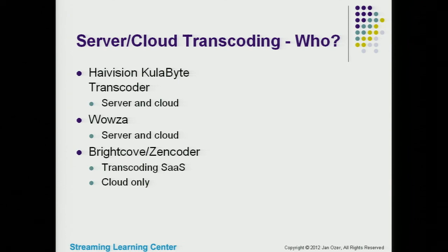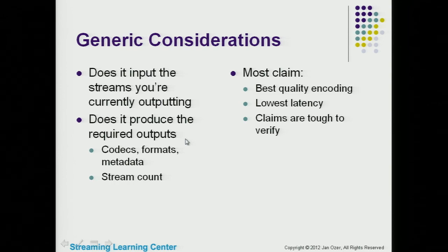Players: HayVision Coolabyte Transcoder, which has been shipping for a while; Wowza, also shipping for a while; and Brightcove-owned Zencoder, which just launched a transcoding software-as-a-service — cloud only, you can't put it on your own servers. Zencoder is currently in beta. Same generic considerations apply: does it input your current streams, does it produce the required outputs? Claims about best quality and lowest latency are tough to verify.